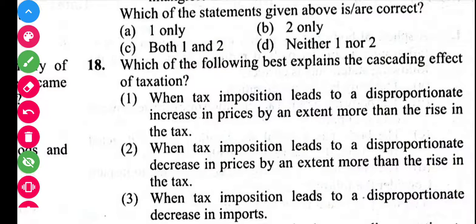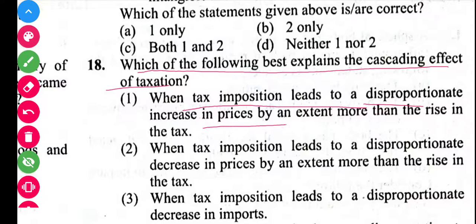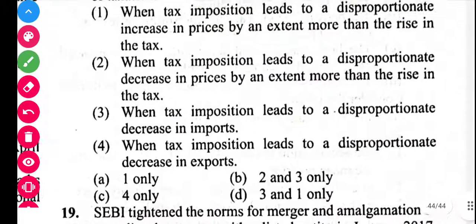Next question is related to the cascading effect of taxation. When a tax imposition leads to a disproportionate increase in price by an extent more than the rise in the tax, that is called the cascading effect of taxation. When tax increases and the price of any commodity increases higher than the tax imposed, that is also the cascading effect. So the answer is A.